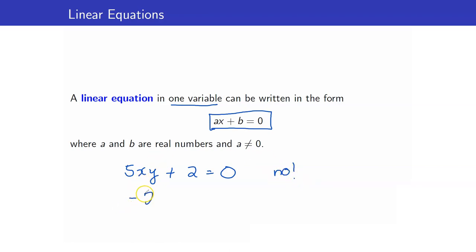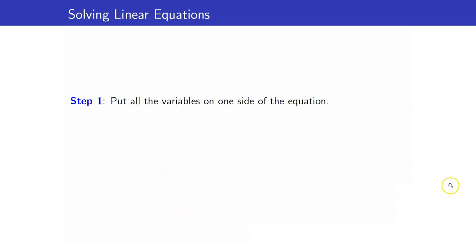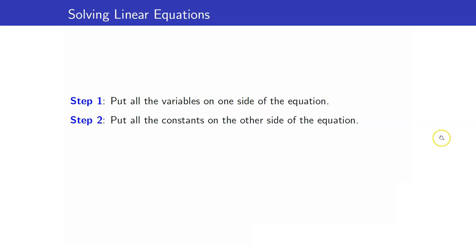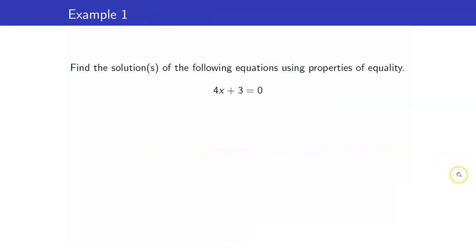If we have negative 2 equals 3x, this is a linear equation. I can write it in standard form by adding 2 to both sides using the addition property of equality. Therefore, I have 3x plus 2 equals zero, which is exactly the required form. Here are the steps in solving linear equations: first, put all the variables on one side and all the constants on the other side; then divide both sides by the coefficient of the variable.